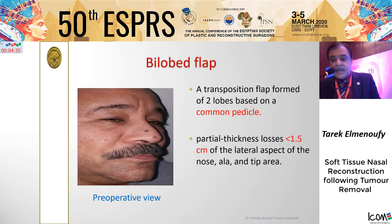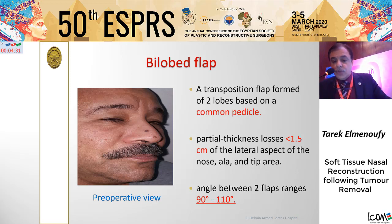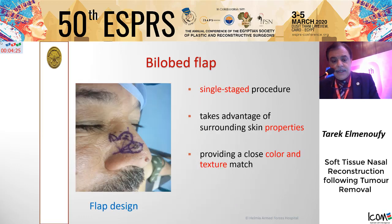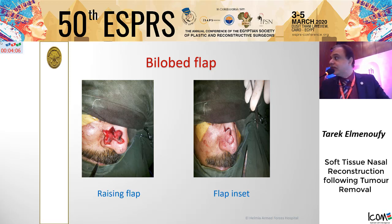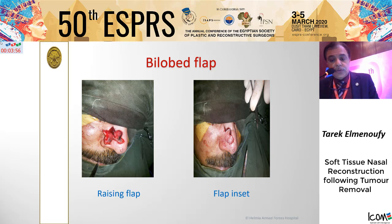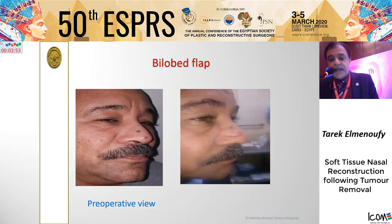The bi-lobed flap is a transposition flap formed of two lobes based on a common pedicle, used for small defects less than one centimeter. We can see the design of the flap — it is a single-stage procedure with the advantage of using surrounding skin, providing close color and texture match. This shows elevation and inset of the flap after excision of the tumor with safety margin, and the comparison between pre-operative and post-operative with good accepted results.